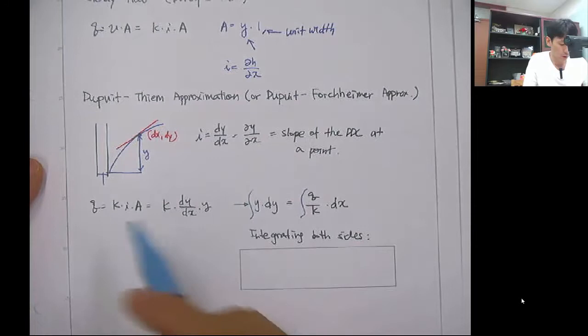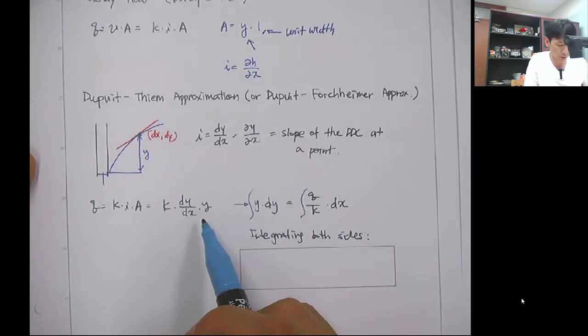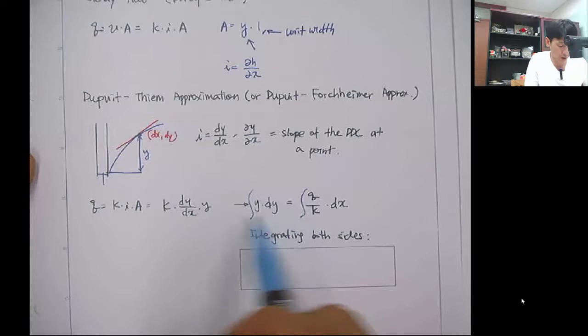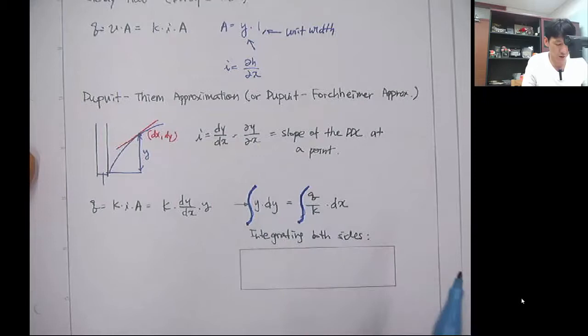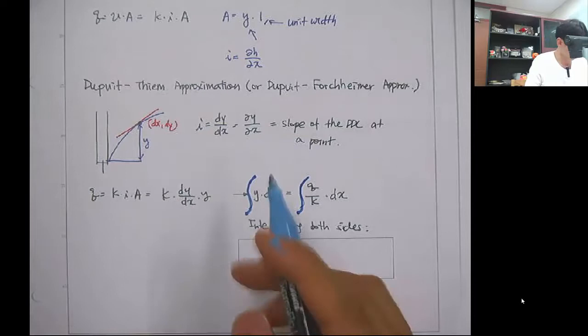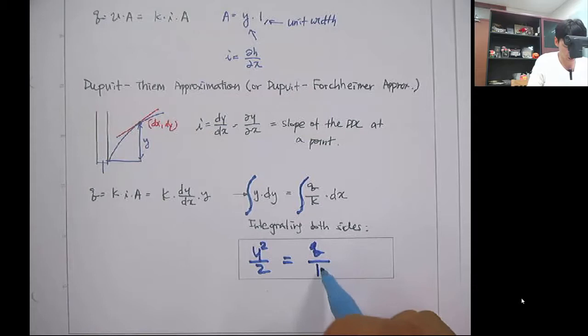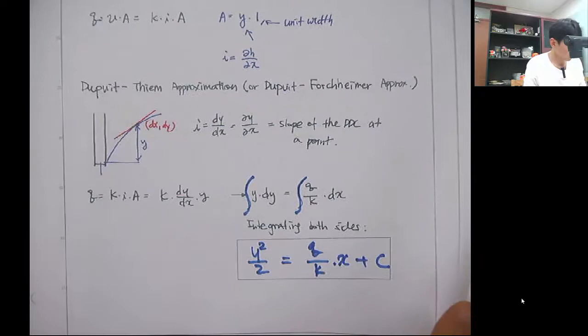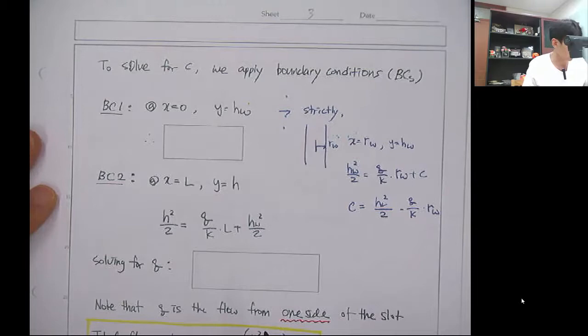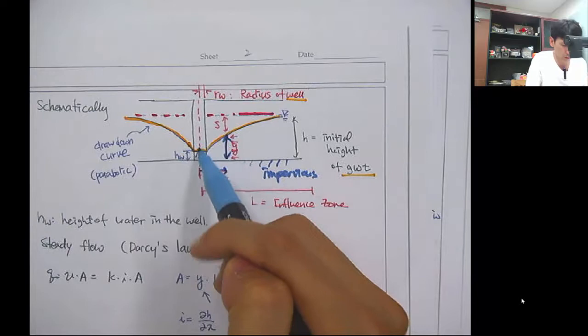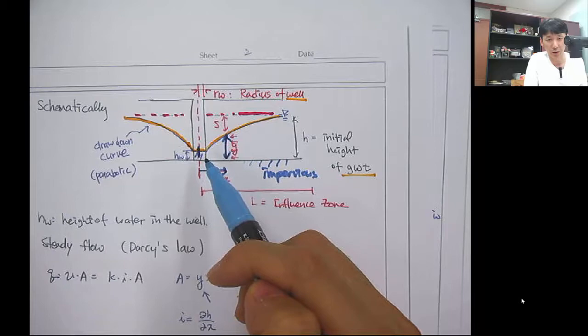We can integrate both sides. Rearranging, y dy remains on one side and (q/k) dx on the other. Integrating both sides gives: y²/2 = (q/k)·x + C. To solve for C, we apply the first boundary condition: at x = 0 (the well face), y = h_w. Substituting gives C = h_w²/2.